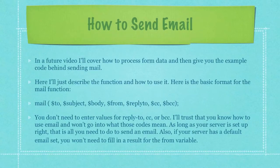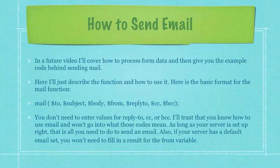In a future video I'll cover how to process form data and give you the example code behind sending mail. Here I'll just describe the function and how to use it. The basic format for the mail function has mail followed by, inside the brackets: who you want to mail it to, what the subject should be, what the body of the email should be, who it's from, a reply-to if you want, and then two additional variables — the CC and the BCC. You don't need to enter values for the reply-to, CC, or BCC. As long as your server is set up right, that's all you need to do to send an email. Also, if your server has a default email set, you won't need to fill in a value for the from variable.